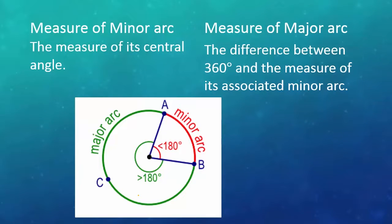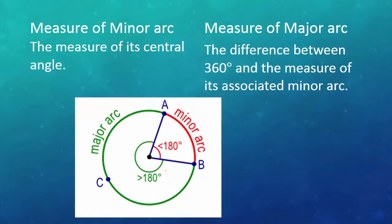Measure of minor arc: the measure of its central angle. In the minor arc, it is the measure of the central angle, and remember that that angle has to be less than 180 degrees. Measure of major arc: the difference between 360 degrees and the measure of its associated minor arc. To find the measure of the major arc, you're going to take the minor arc and subtract it from 360 degrees, and know that that has to be greater than 180 degrees but less than 360 degrees.